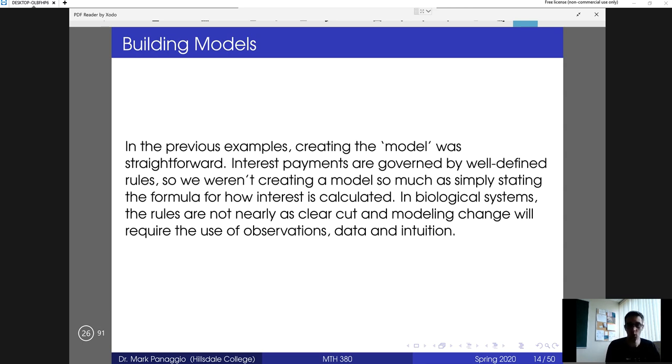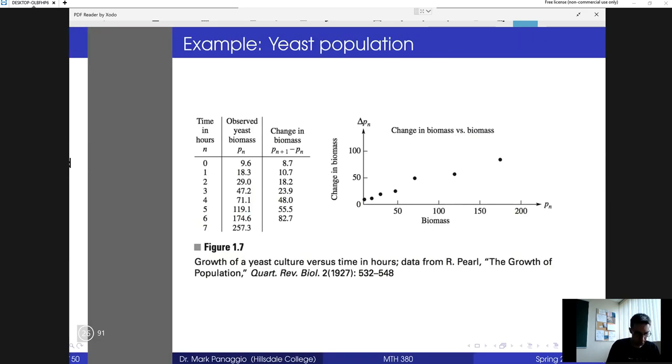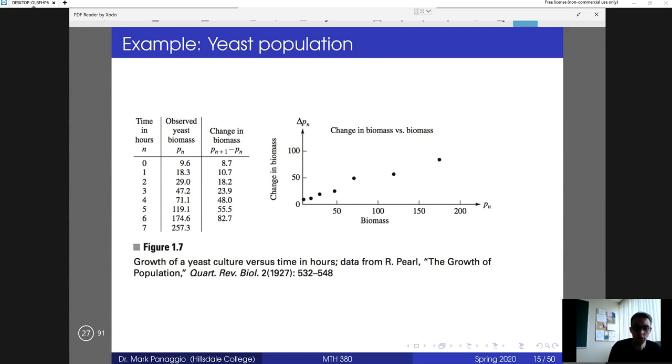In this video we're going to look at one particular example: the growth of a yeast population. If you look in your textbooks in figure 1.7, they actually have this nice little table and plot where we've got the time in hours and the biomass. I believe this was probably in grams or milligrams, and so we can see how those quantities are changing over time.